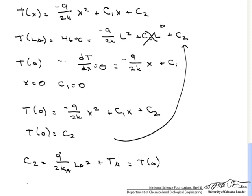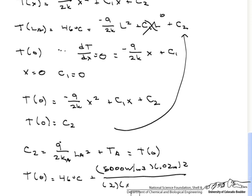Therefore, T at 0 equals 46 degrees C plus 5000 watts per meter cubed times 0.02 meters squared, divided by 2 times 0.24 watts per meter K. And that equals 50.2 degrees C.